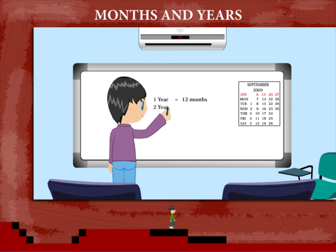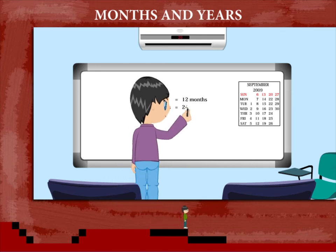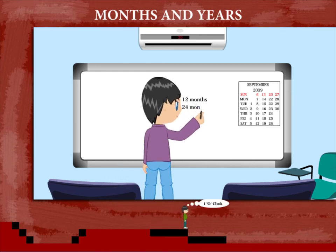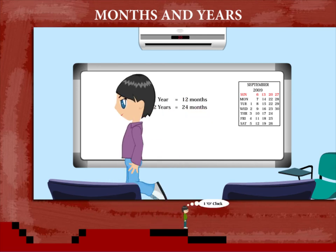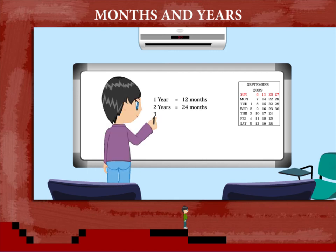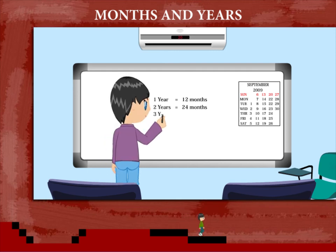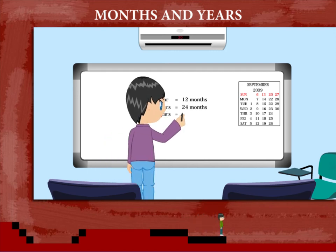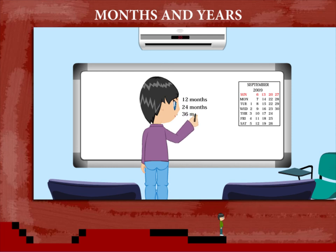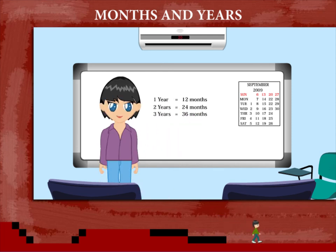So, 2 years will be equal to 24 months. In the same way, 3 years will be equal to 36 months.